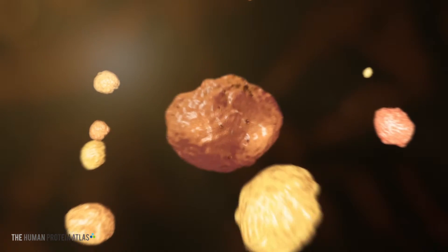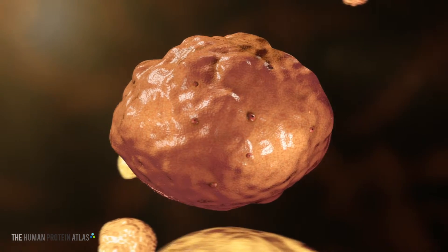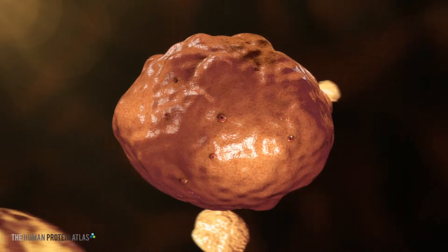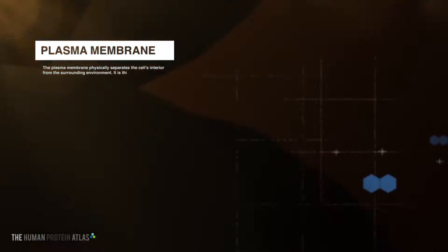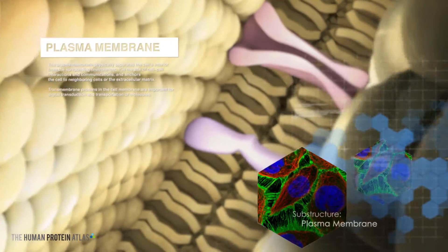The bustling activity of the human cell is maintained as proteins perform specific tasks in designated compartments called organelles. The plasma membrane encloses the cell.